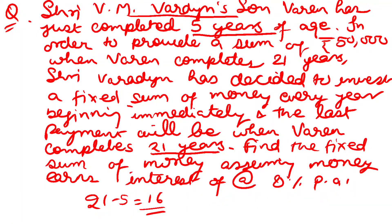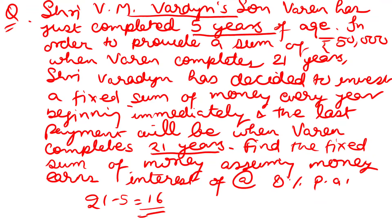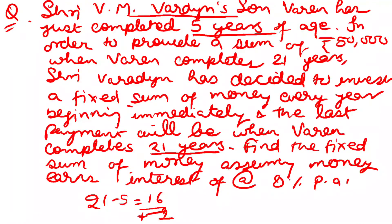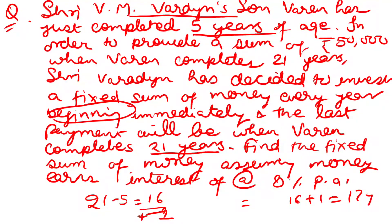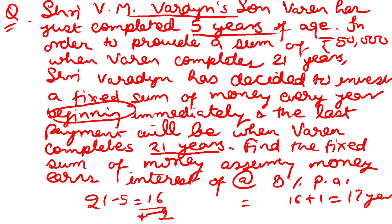But the compounding starts from the beginning of the year, so it will be 16 plus 1 because it will be considered as 17 years total. The time period is 17 years and the interest rate is 8% per annum.